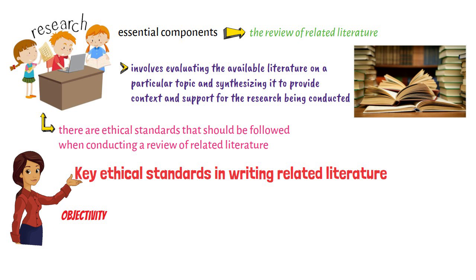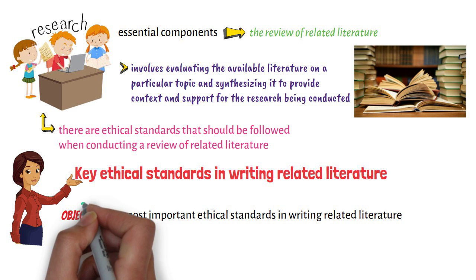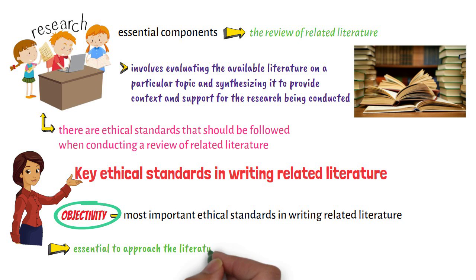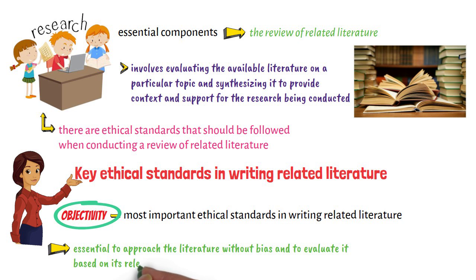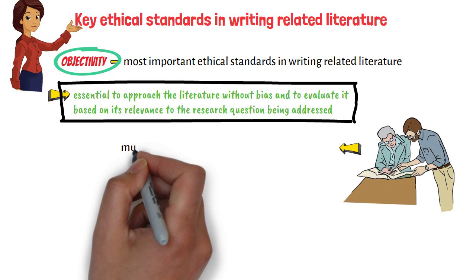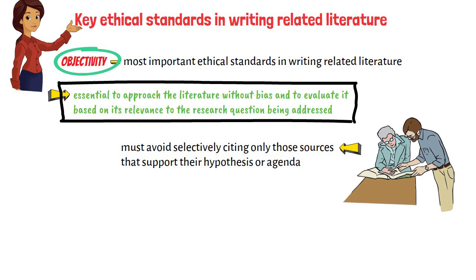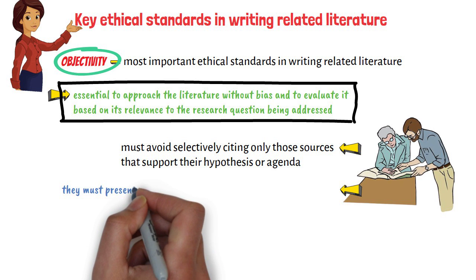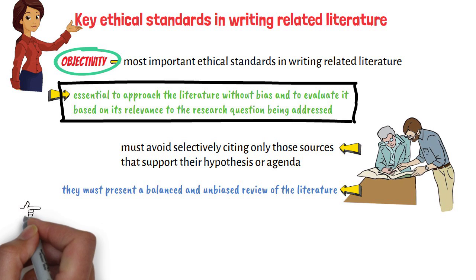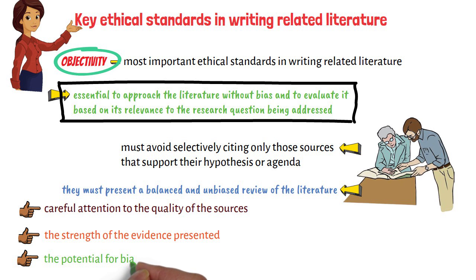First, in terms of objectivity. One of the most important ethical standards in writing related literature is objectivity. It is essential to approach the literature without bias and to evaluate it based on its relevance to the research question being addressed. This means that the researcher must avoid selectively citing only those sources that support their hypothesis or agenda. Instead, they must present a balanced and unbiased review of the literature. This requires careful attention to the quality of the sources, the strength of the evidence presented, and the potential for bias in the research.